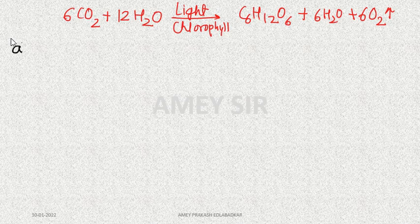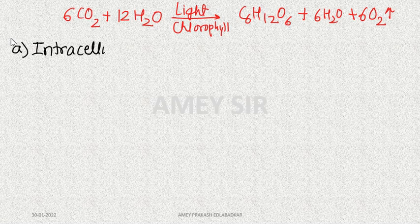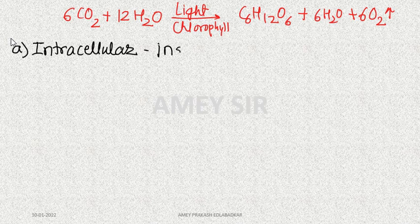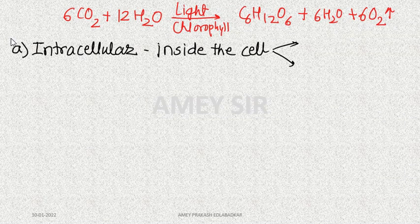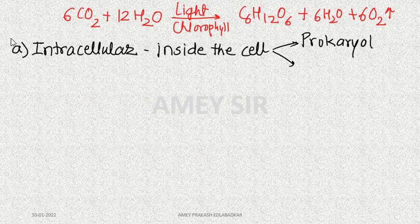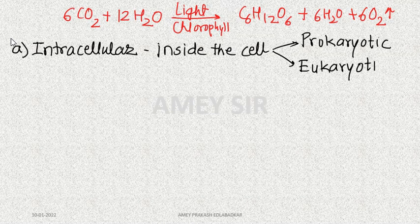In my definition I stated that photosynthesis is an intracellular process — carried out inside the cell. I have two types of cells: prokaryotic cells and eukaryotic cells. Do all cells of both types carry out photosynthesis? Let us go into a little detail for that answer.